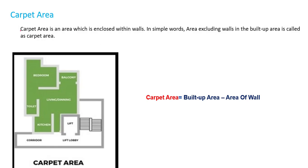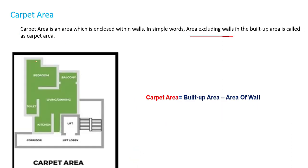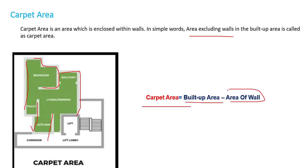The next term is carpet area. Carpet area is the area enclosed within the walls. In simple words, it is the area excluding walls from the built-up area — when we exclude only the walls, the remaining area is called carpet area. So carpet area equals built-up area minus area of walls.